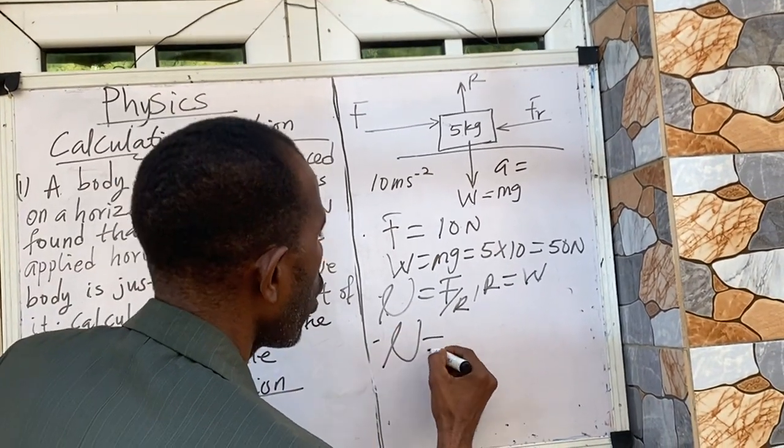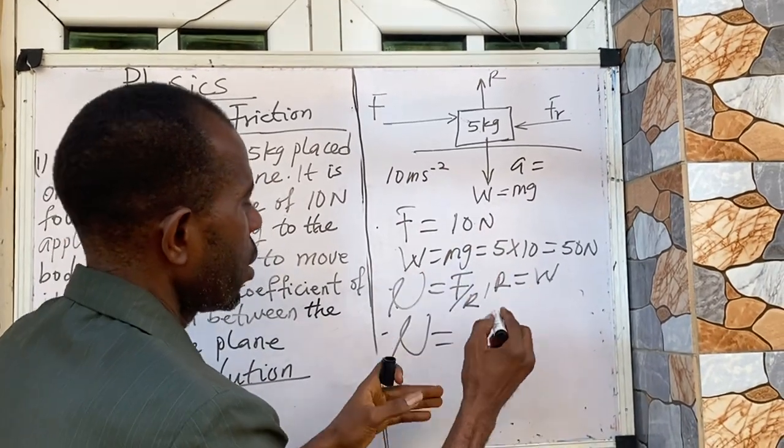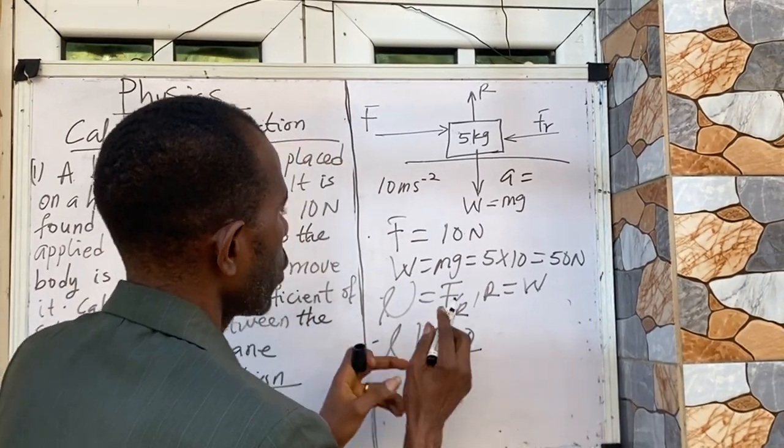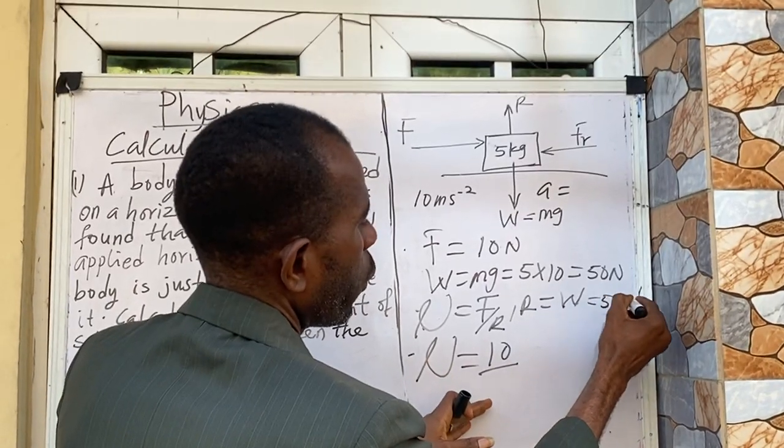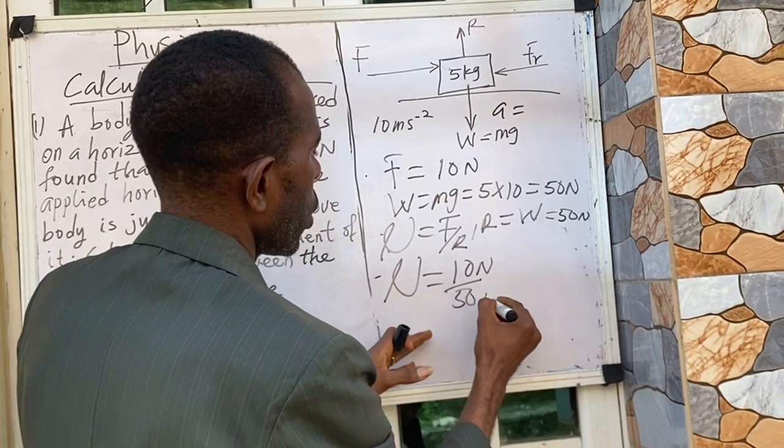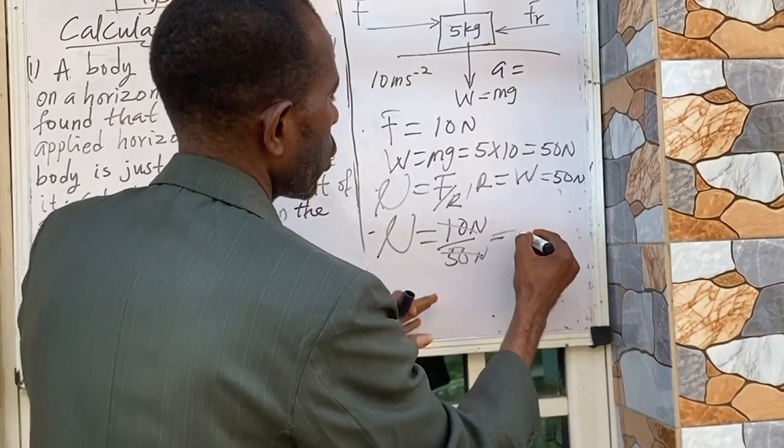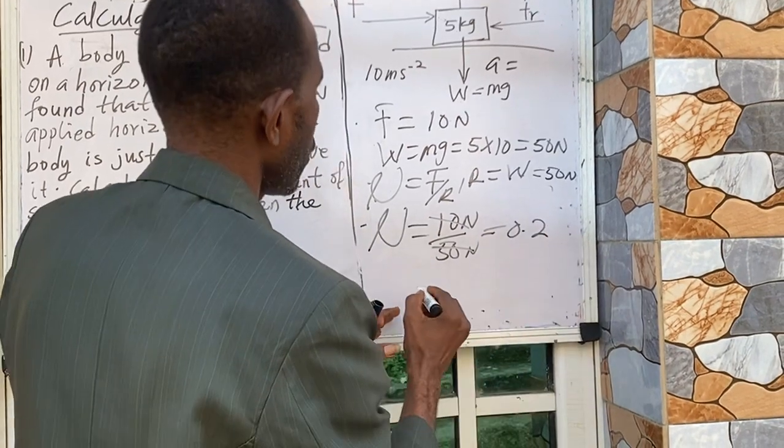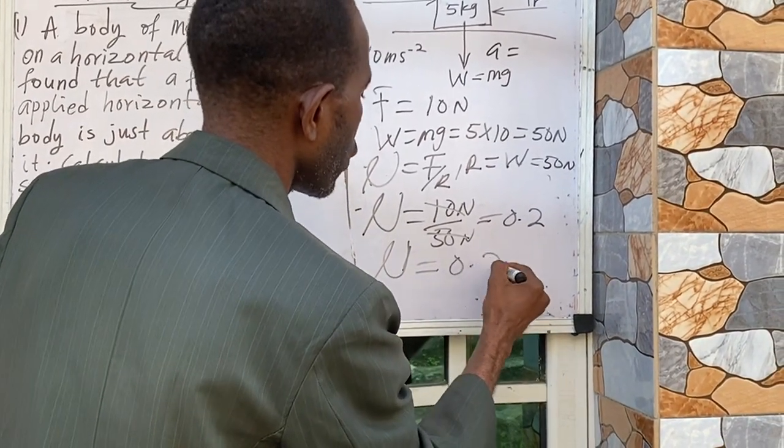So in that case I'm going to take R as equal to 50 Newton. So my μ now will become equal to F, which is 10 Newton, all over R, which is taken as W which is equal to 50 Newton. So 10 Newton all over 50 Newton. At the end of the day, this cancels out. We are going to have 0.2. So the μ, which is the coefficient, is equal to 0.2. It doesn't have units because it's a ratio of two forces.